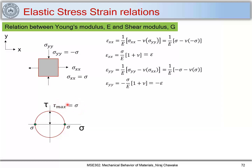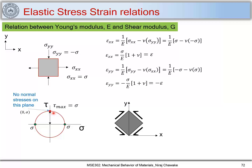We deliberately chose this condition to get a plane where there is no normal stress. At this location on the Mohr's circle the coordinates are (0, sigma) — no normal stress and only shear stress. This is the plane of maximum shear. The corresponding element has only shear stresses and no normal stresses.